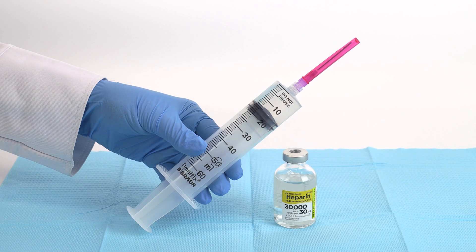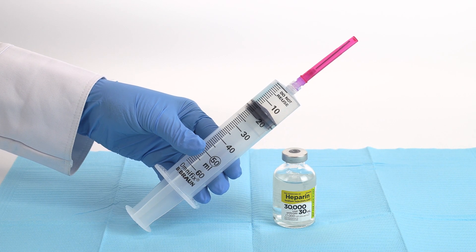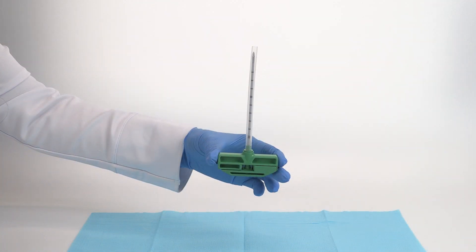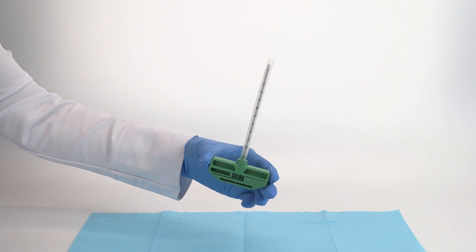To begin, aspirate 15 milliliters of Heparin into the 30 milliliter syringe. Remove the stylet from the bone marrow needle and prime the needle.